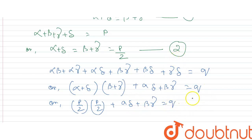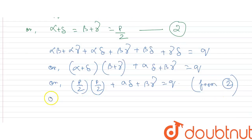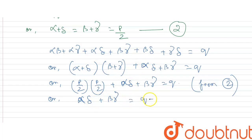Substituting from equation 2, we can write alpha·delta + beta·gamma = q - p²/4. This is our equation 3.